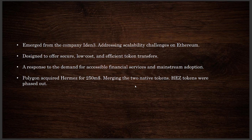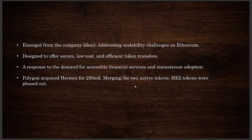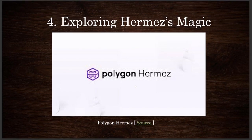The Hermez team emerged from the company iden3. They focused on offering secure, low-cost, and efficient token transfers in response to demand for accessible financial services and mainstream adoption. Polygon acquired the Hermez team for $250 million, and the two native tokens were merged. The Polygon team has been acquiring ZK solutions broadly — Polygon Miden, Polygon Hermez, and the Mir protocol for $400 million. Once the two native tokens were merged, the HEZ tokens from the Hermez 1.0 project were phased out.